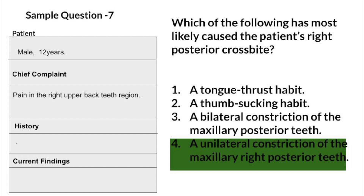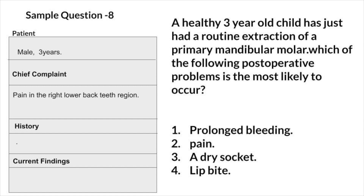Because in a mixed dentition, a unilateral posterior crossbite is usually a result of bilateral symmetrical constriction of maxillary posterior teeth. This constriction causes a lateral functional shift of the mandible. A unilateral constriction of the maxillary posterior teeth is uncommon. Answer: unilateral constriction of maxillary right posterior teeth. Question 8: Patient, male, 3 years, chief complaint pain in the right lower back teeth region.